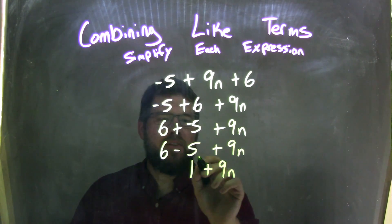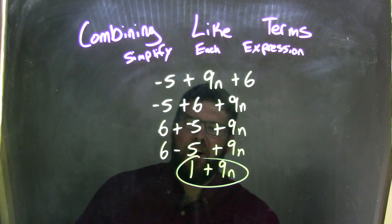And that is our final answer. There's no other like terms that combine. The 9n was just all by itself the whole way.